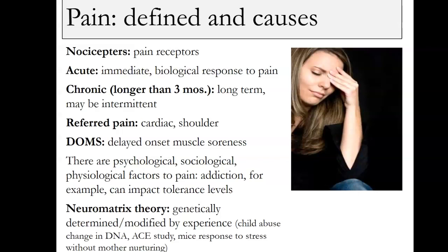Neuromatrix theory says a lot of pain is genetically determined and modified by experience. For example, if somebody's abused as a child — remember those ACE scores we talked about in wellness? Child abuse can actually affect your DNA, and it can be a lifetime kind of deal. They've seen this with mice: even mice who don't get a nurturing mother respond to stress and pain differently for their entire lifetime. What happens as a child affects them for the rest of their life, so they may be more sensitive to pain and have less tolerance for pain.